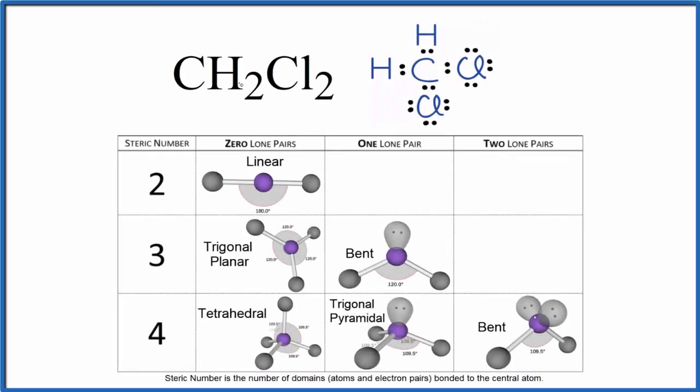In this video, we'll look at the molecular geometry for CH2Cl2. This is dichloromethane. So we'll start with the Lewis structure here for CH2Cl2, and we're going to find the steric number. That's the number of things attached to this central carbon here.